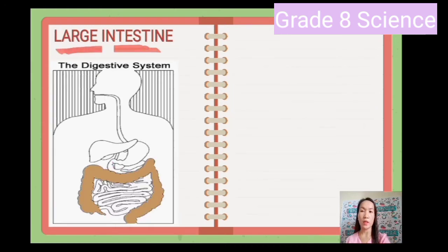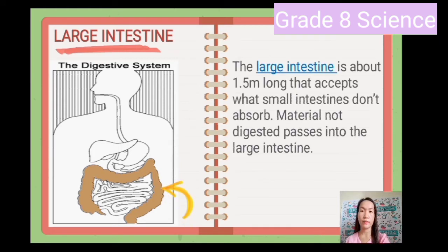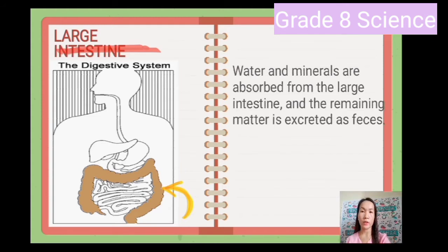The next part is the large intestine. The large intestine is about 1.5 meters long. It accepts materials that the small intestine does not absorb — undigested matter passes into the large intestine. Water and minerals are absorbed from the large intestine, and the remaining matter is excreted as feces. The large intestine is also called the colon.